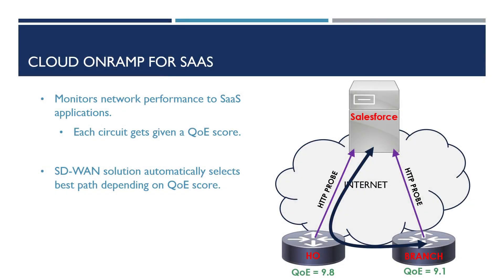In addition to everything we've already discussed, the SD-WAN solution has a set of functionalities to address our organisation's push to cloud services. The SD-WAN service caters for Software as a Service applications like Salesforce and Infrastructure as a Service like AWS or Azure. This functionality within Cisco's SD-WAN is known as Cloud OnRamp.